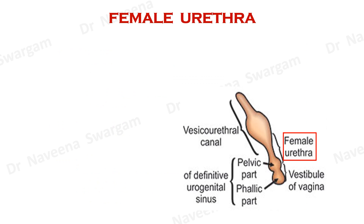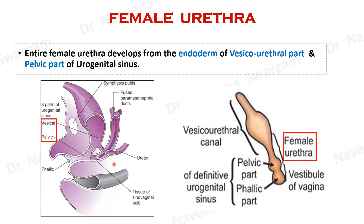Let's see the development of female urethra. The entire female urethra develops from endoderm of vesico-urethral and pelvic parts of urogenital sinus, as the phallic part of urogenital sinus forms the vestibule into which the urethra opens.